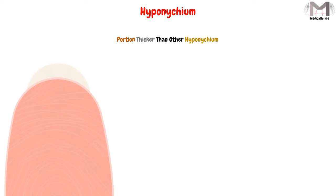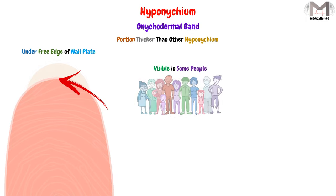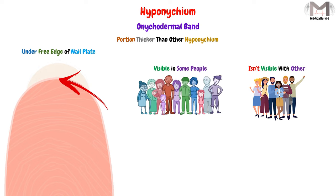Within the hyponychium, there is a portion that is thicker than the rest, located precisely under the free edge of the nail plate, called the onychodermal band. This onychodermal band is visible in some people while it isn't in others, which is a normal variation between people.